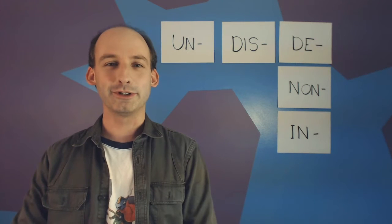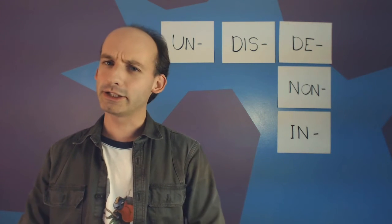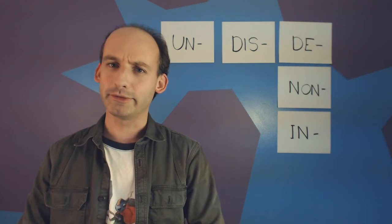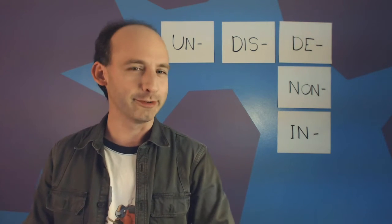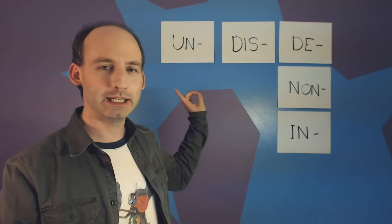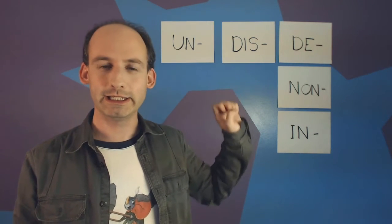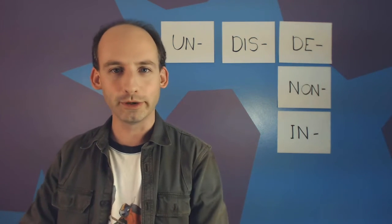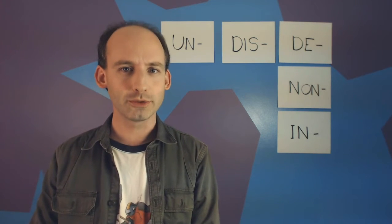Welcome to Learning English with NeverDot. I'm NeverDot. English has a lot of different ways to compose an opposite word, but not so many that you can't memorize them all through careful practice. By adding any of UN, DIS, DE, NON, or IN to a word, you can make it an opposite. Let's look at some examples to make sure that's true.